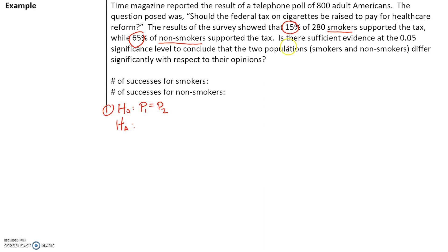What are we testing? Is there sufficient evidence at the 0.05 significance level to conclude that the two populations differ significantly with respect to their opinions? Since they could differ in either direction — greater than or less than — our alternate hypothesis is that P1 is not equal to P2. All we have to show is that the two proportions are not equal. So that is our null and alternate hypothesis.